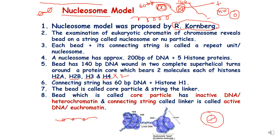The first level of packaging is called the nucleosome model, also called the beads-on-string model. It was proposed by Roger Ornberg. Examination of eukaryotic chromatin reveals beads on a string, also called nucleosomes or new particles. Each bead plus its connecting string is called a repeat unit or a nucleosome.